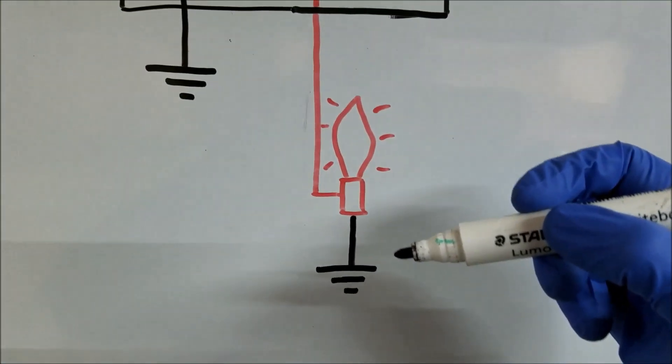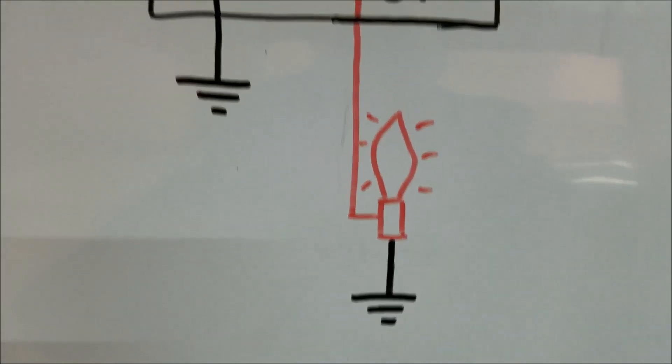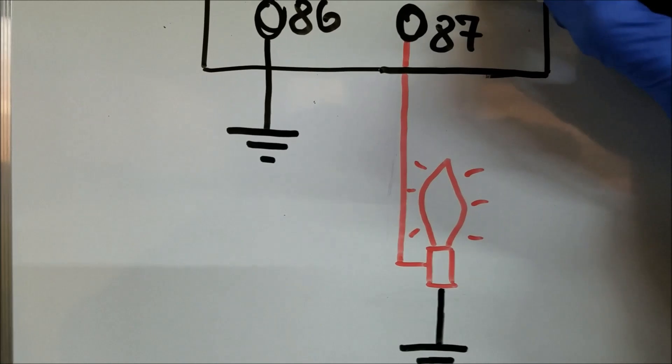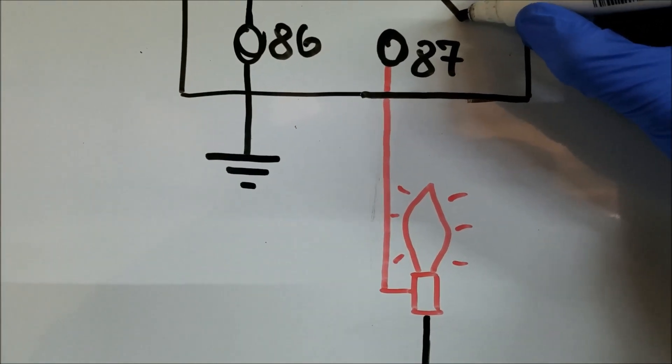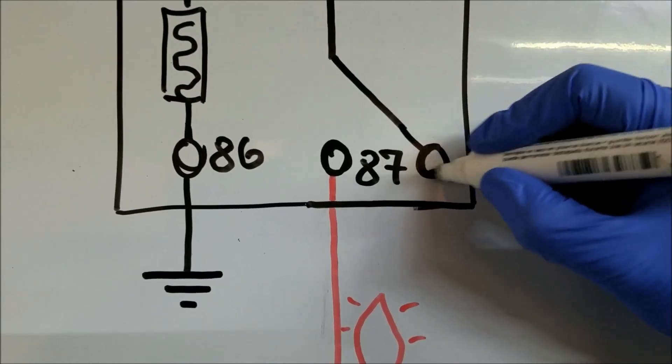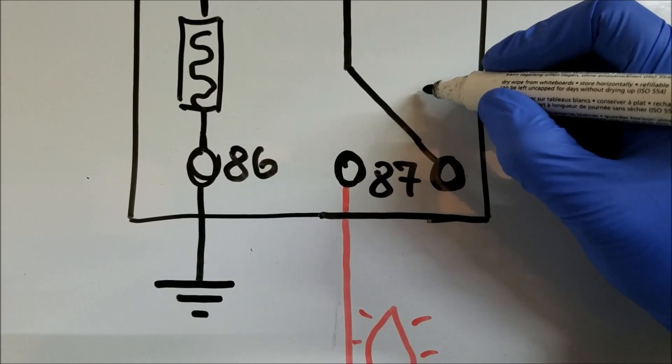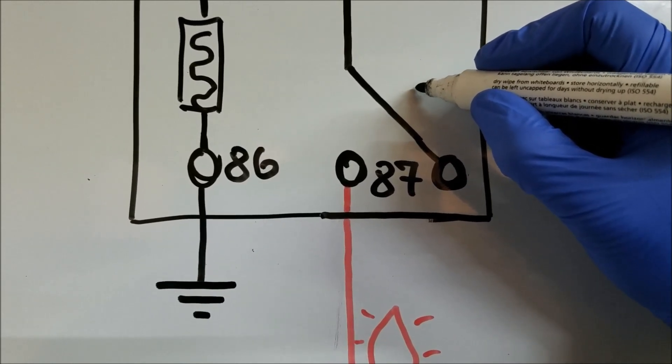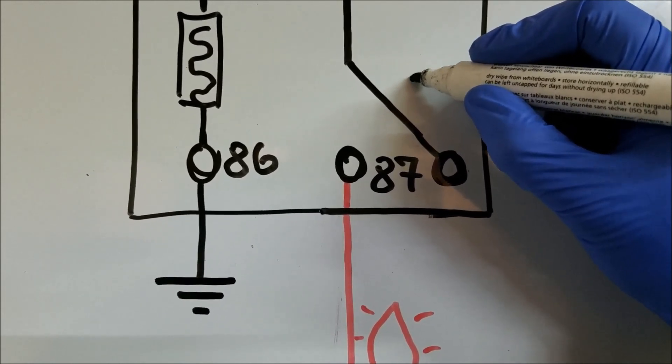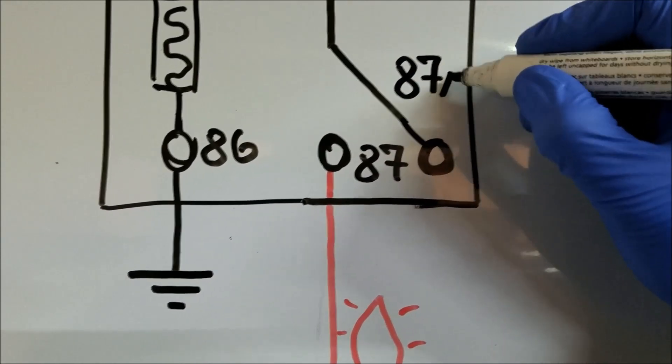You could also have five pin relays, and they are basically used to power two components but not at the same time. They would power one component until you activate the electromagnet, then they would power another one. They're usually marked with 87a.